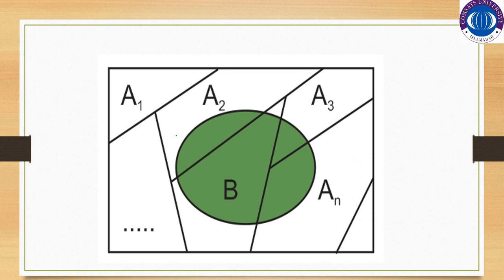When two or more than two mutually exclusive and exhaustive events divide the sample space — like here we have sample space divided into parts A1 through An — and there is some other event B which occurs in conjunction of at least two or more events, we use the multiplication law which we call the total probability, where we find the probability of B.